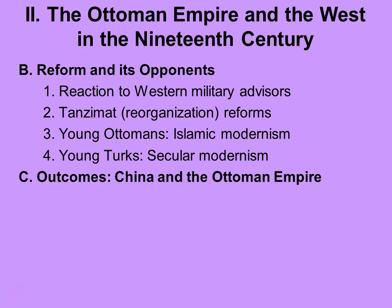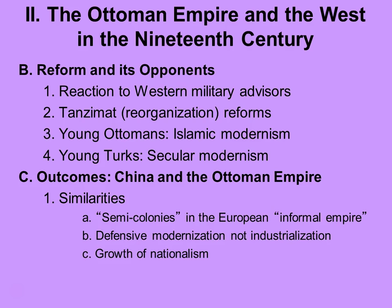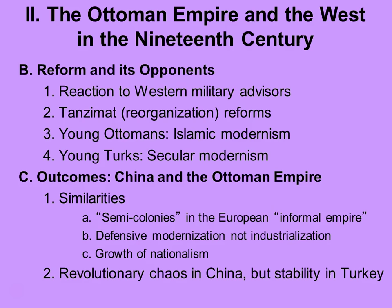Let's take a moment to compare and contrast the outcomes of the attempts to modernize in both China and the Ottoman Empire. Several similarities are immediately apparent: in the space of a century, these two great empires were brought low by the forces of the industrialized West. While both pursued policies of defensive modernization, neither achieved a complete industrial transformation, and both societies saw the spread of nationalism as a motivating ideology with broad popular appeal. But there is one big difference: while both empires collapsed in the early 20th century, China plunged into decades of revolutionary chaos until the Communist victory in 1949 and beyond, whereas after World War I the newly formed Turkish Republic enjoyed remarkable stability.